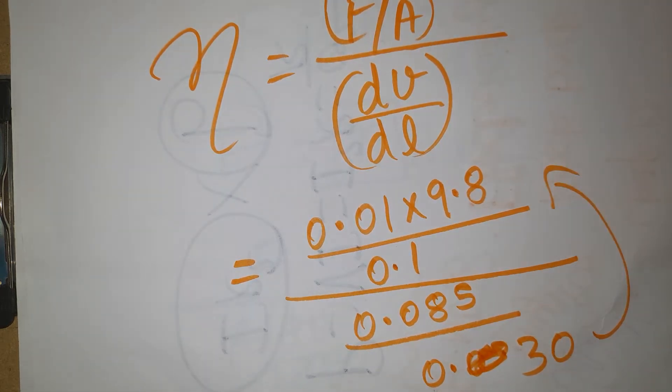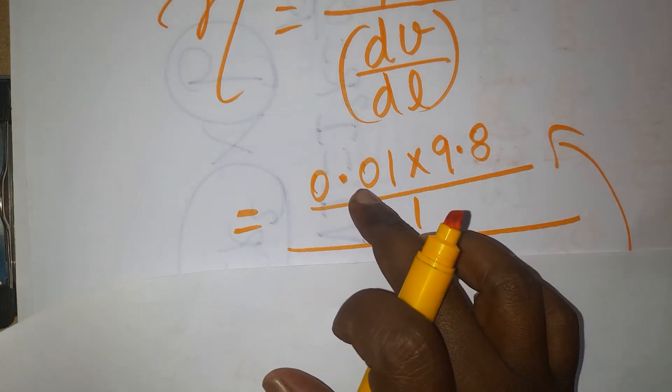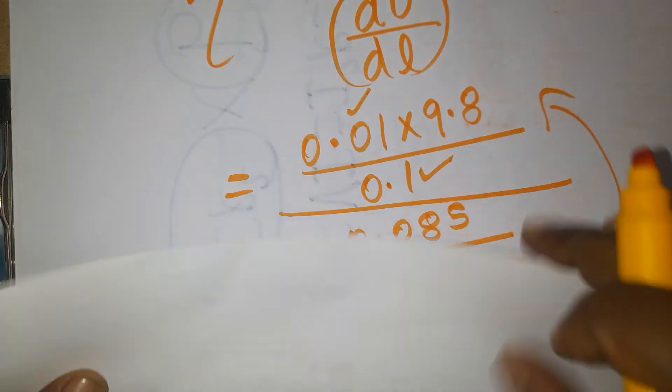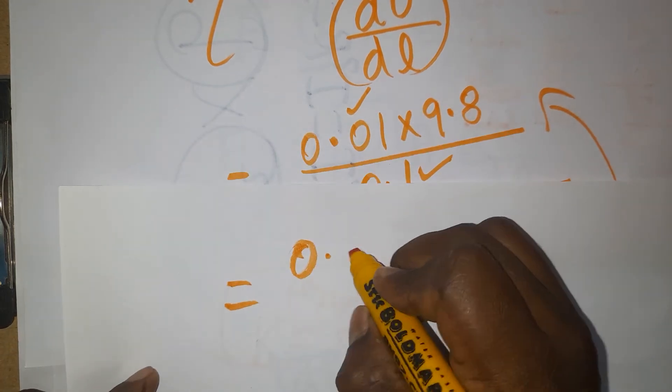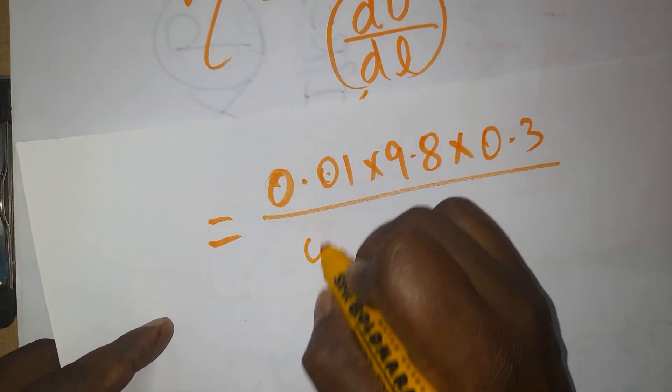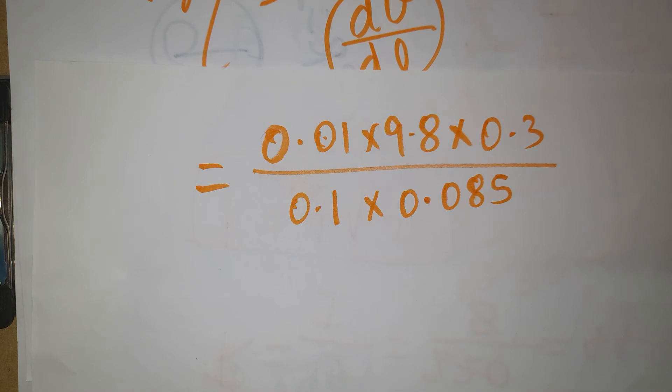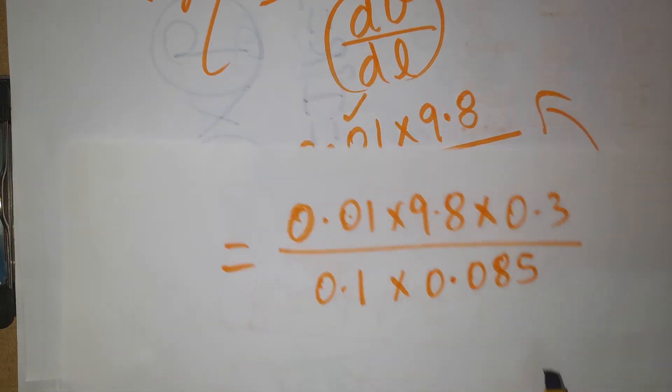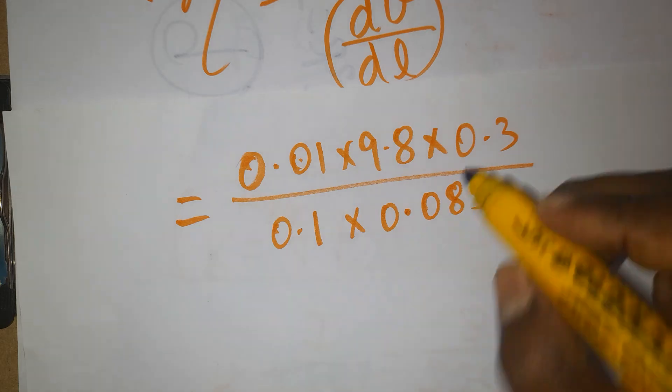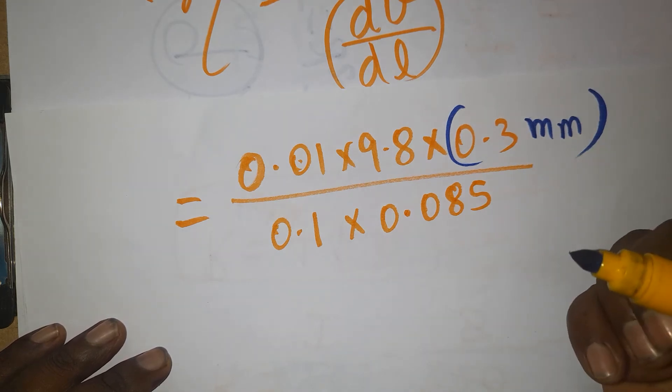The denominator directly will go into the numerator. See here, 9.8 times 0.01, I will get this multiplication. First we will modify the equation: 0.01 times 9.8 times 0.3, because denominator becomes numerator, divided by 0.1 times 0.085. Now I should remove the decimal. 0.03 is given as millimeter. Everything should be in SI units. Millimeter to meter, 10⁻³ you can include, so this will become 10⁻³ as well.